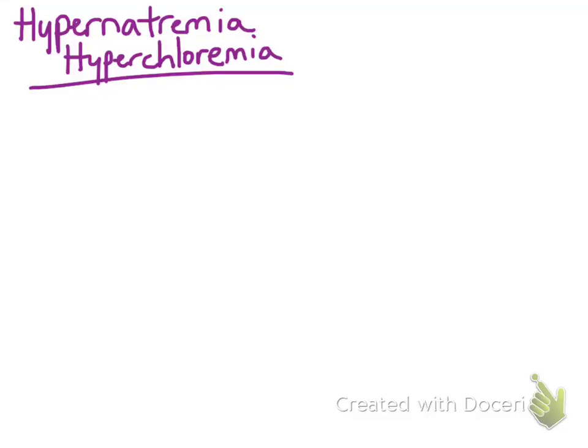This video is going to be on hypernatremia and hyperchloremia, which means there's an increased concentration of sodium or chloride in blood. To help illustrate the causes of hypernatremia and hyperchloremia, I'm going to draw two boxes. The first one is supposed to represent the concentration of sodium and chloride in blood.